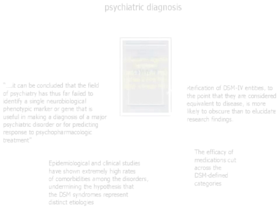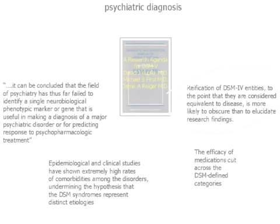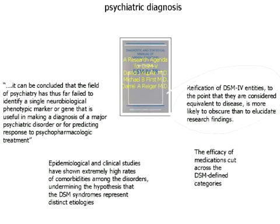Clinical brain profiling is a diagnostic system that goes beyond the descriptive diagnostic system of the DSM. Why do we need clinical brain profiling? Why do we need an alternative for the DSM? As you can see, the DSM 5 agenda has come up with some criticism, and it was found that the field of psychiatry has thus far failed to identify a single neurobiological phenotype marker or gene that is useful in making a diagnosis of major psychiatric disorder or for predicting response to pharmacological treatment.